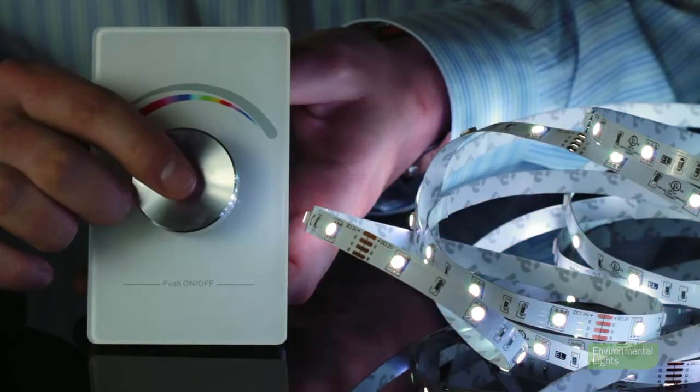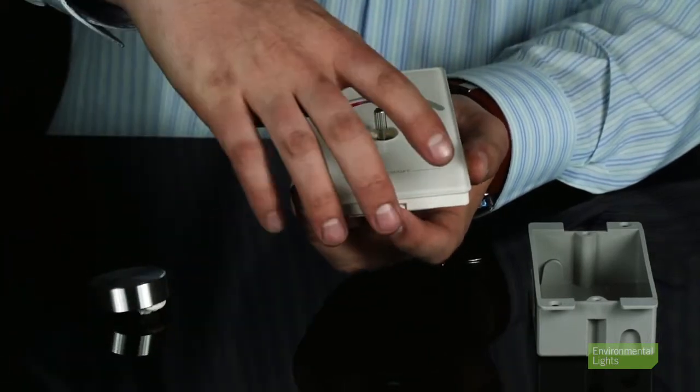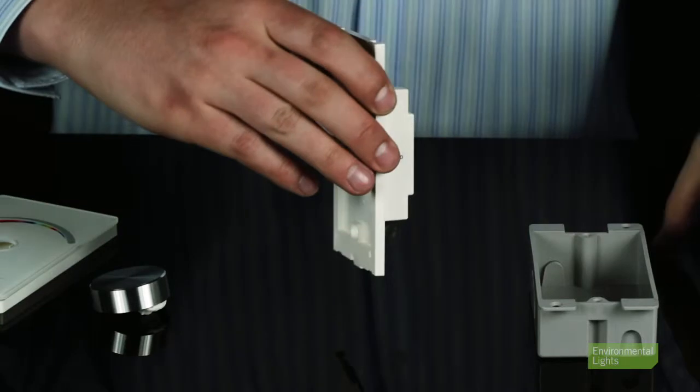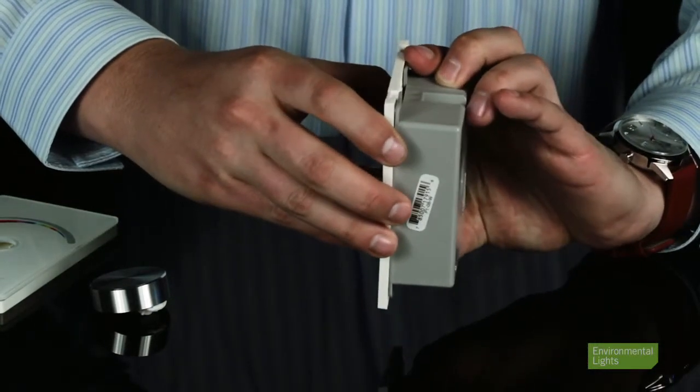These wall mount Pro rotary knobs fit into standard junction boxes and are battery powered so there is no extra wiring. Just use the tab to remove the faceplate and expose both the battery tray and mounting holes to install the controller in a junction box.